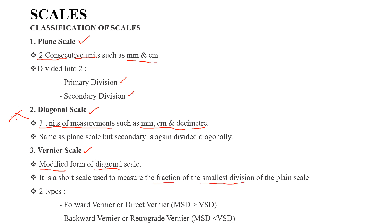Next is the Vernier scale. There are two types of vernier scale. The first is the forward vernier or direct vernier, where the main scale division is greater than the vernier scale division. The second is the backward vernier or retro vernier, where the main scale division is less than the vernier scale division.